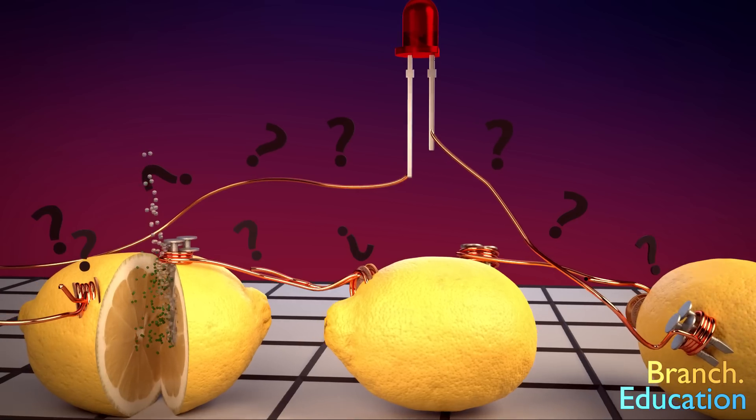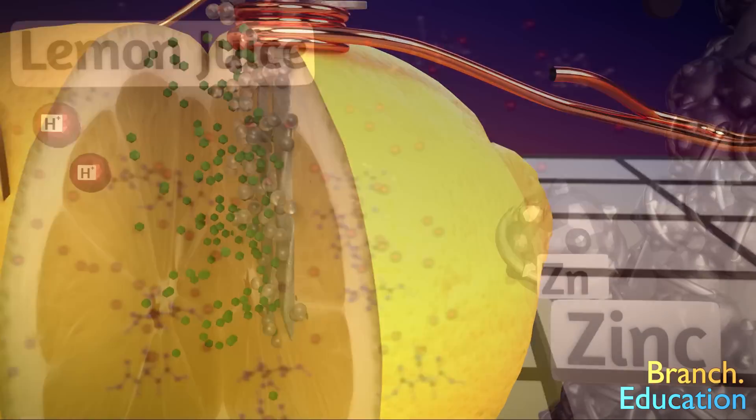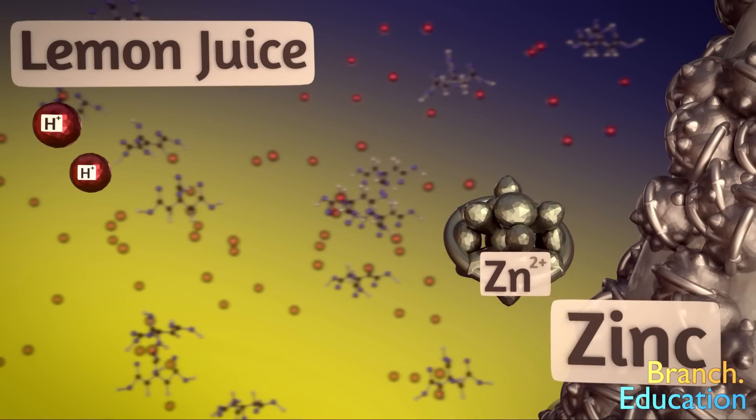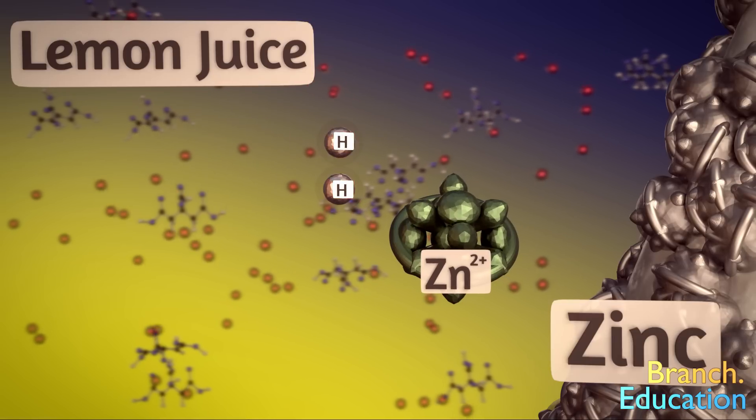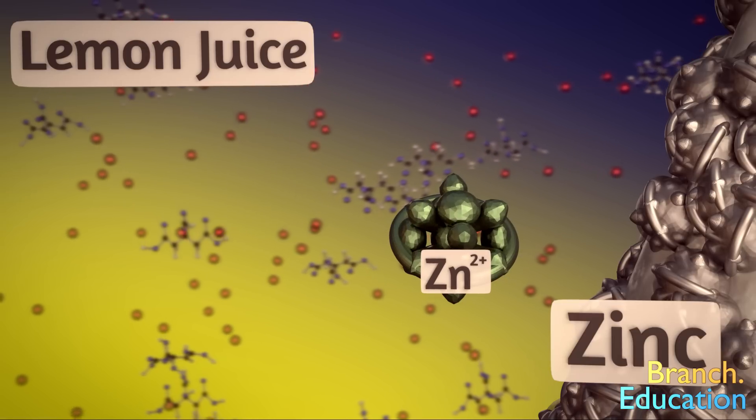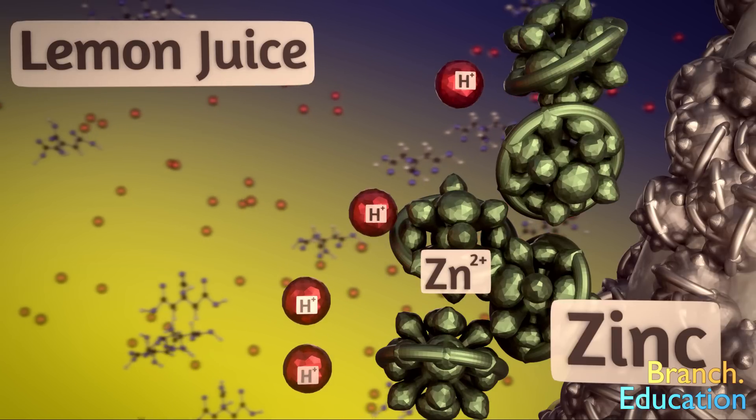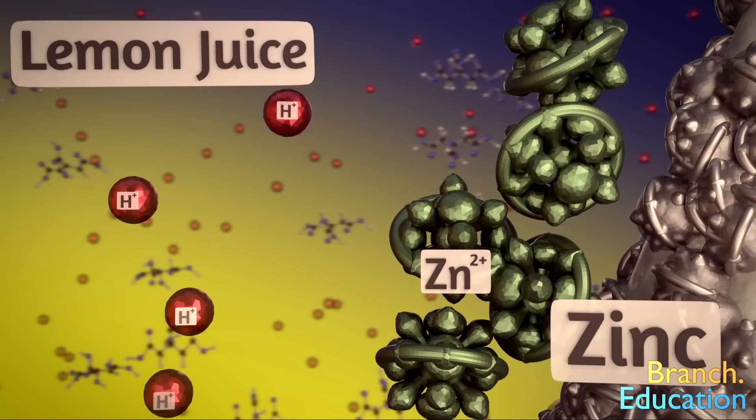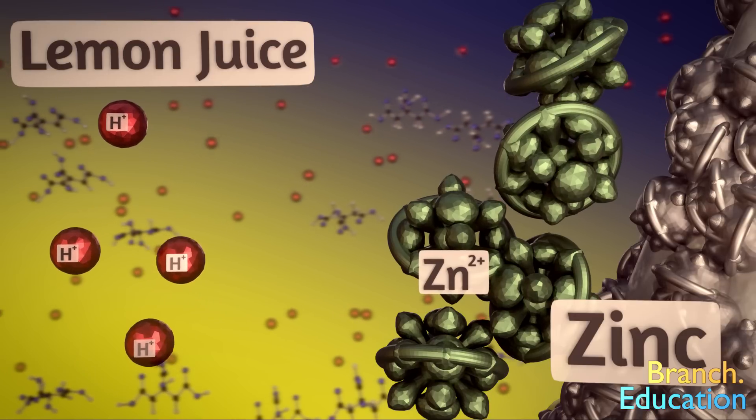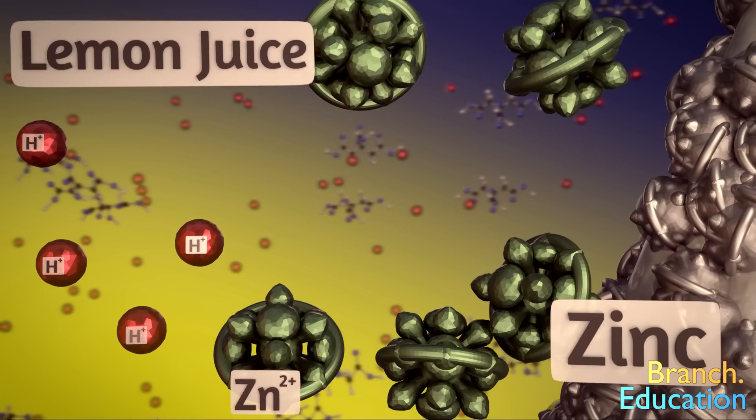To answer this, let's rewind and zoom in. When the zinc loses its electron, it becomes positively charged, falls off the nail, and dissolves into the lemon juice. This positively charged zinc repels other hydrogen ions. So the zinc forms a kind of traffic jam and has to move out of the way before further hydrogen ions can react with the zinc.